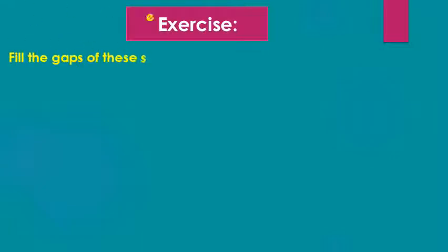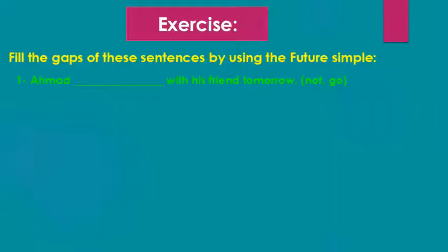Fill the gaps of these sentences by using the future simple. Ahmad with his friend tomorrow. So here we have the keyword tomorrow. And here we have not go, so it is a negative form. So Ahmad won't go with his friend tomorrow.